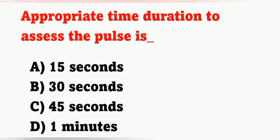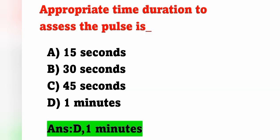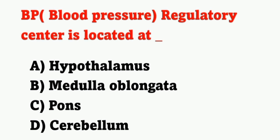Next question: appropriate time duration to assess the pulse — options: A) 15 seconds, B) 30 seconds, C) 45 seconds, D) one minute. The correct answer is one minute — option D.